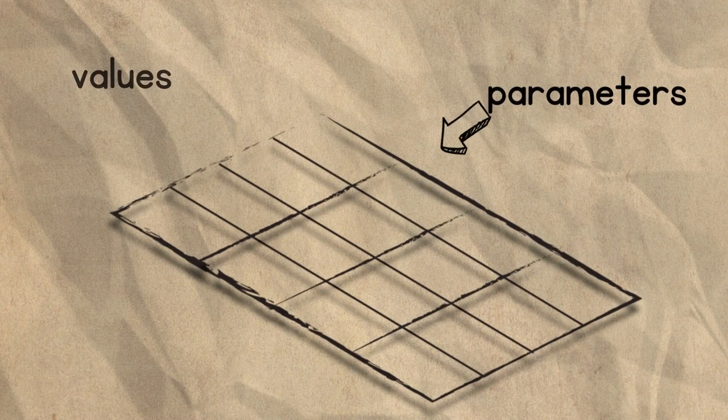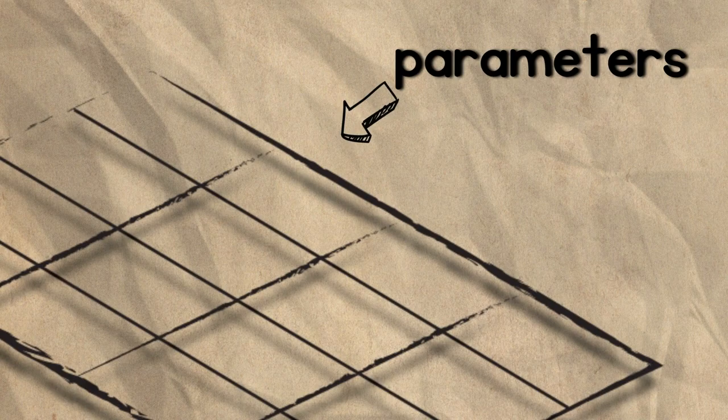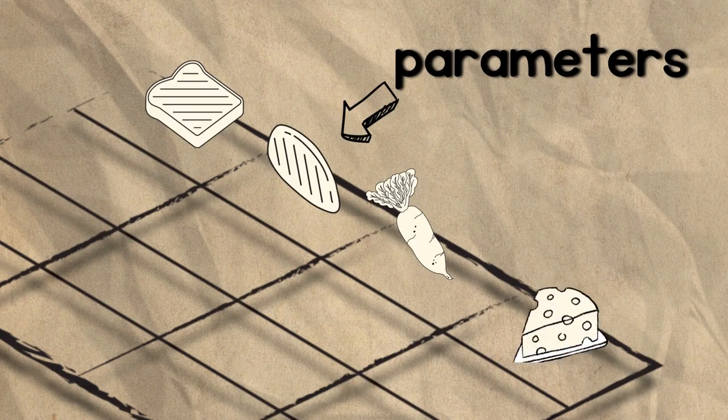Step 1. Identify your parameters and values. Parameters are the individual parts of the problem. For example, when making a sandwich, your parameters would be the different components, such as bread, meat, vegetables, or cheese.